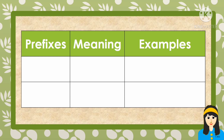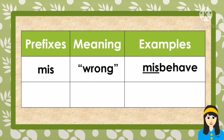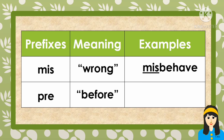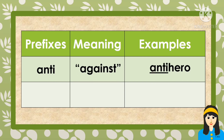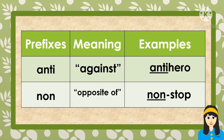Another example of prefixes is mis. The meaning of mis is wrong, and an example word is misbehave. And the next prefix is pre, and the meaning of pre is before. An example word is premade. Another example is anti, the meaning is against, and the example is anti-hero. The next is non, the meaning of non is opposite of, and the example is non-stop.